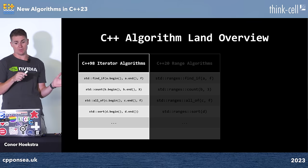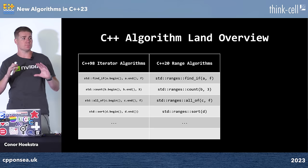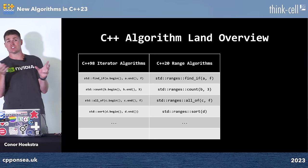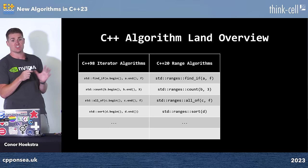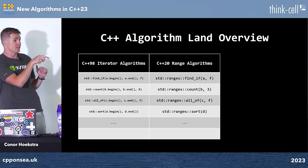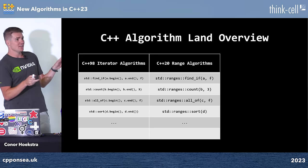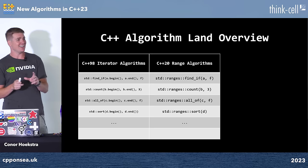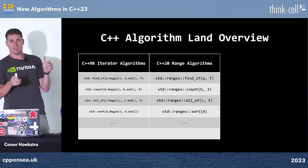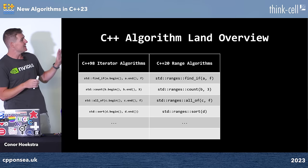In C++20 we added range overloads — the second vertical. These are essentially the same algorithms with some small semantic differences in return types. The key difference is that instead of passing two iterators, you now just pass a range. So ranges::find_if no longer requires .begin() and .end(). You lose a bit of that brevity to the 'ranges::' namespace, but it's a nice improvement overall. These range overloads cover all the algorithms from C++98, 11, 14, and 17.